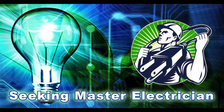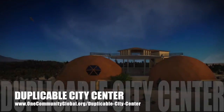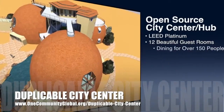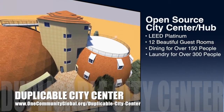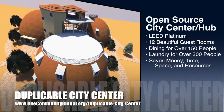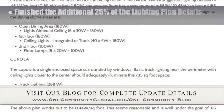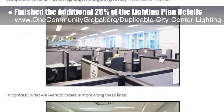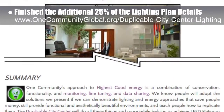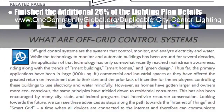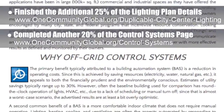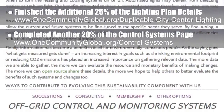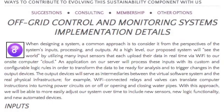One Community is also creating an open-source duplicable city center, designed to be LEED Platinum certified, provide 12 guest rooms, dining for over 150 people, and laundry and recreation space for over 300 people — all while saving money, time, space, and resources. This week, the core team finished an additional 25% of the lighting plan overview details for the duplicable city center lighting plan page — you can see those details here. We also completed another 20% of the control systems page, bringing us to 30% completion of that page in total. Its purpose is to share the control and monitoring system setup, maintenance, evolution, and data gathering and sharing, covering water and electricity use for the duplicable city center and the EarthBag Village Pod 1.